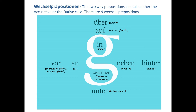Then we have 'vor,' which means in front of or before. In this context we will use it as 'in front of'; other meanings can be seen at A2 or B1 level. Then 'an' means at, 'neben' means next to something, and at the back side 'hinter' means behind an object.